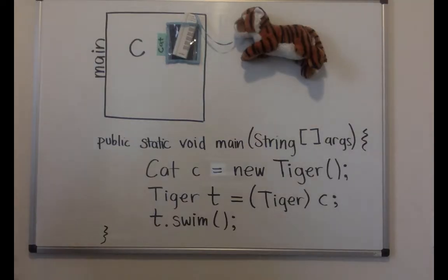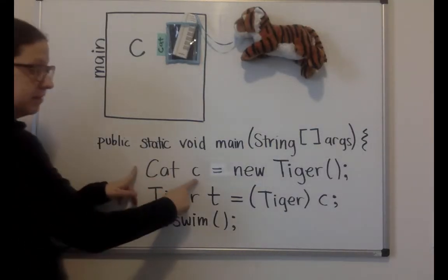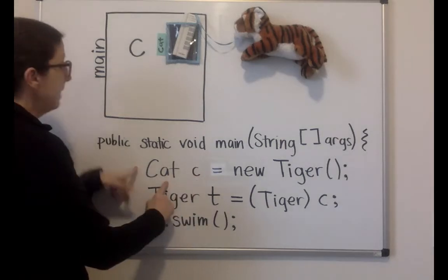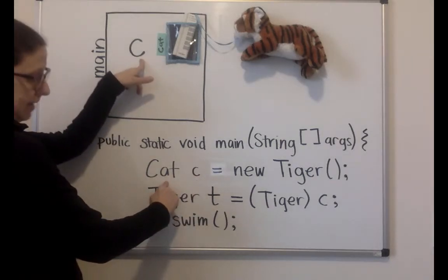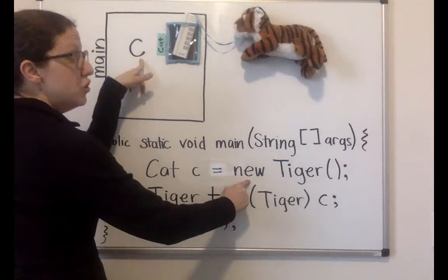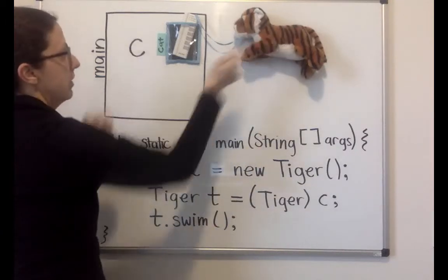I have my main method here, and it creates a variable named C of type Cat. I've got it here in my main method, and it references a new Tiger object. That's my new Tiger object.